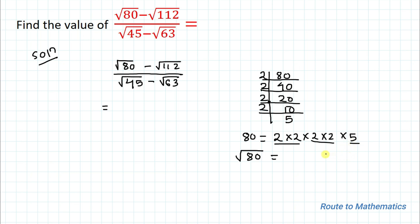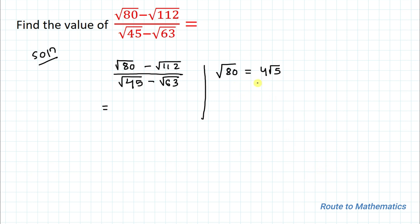We pair the factors of the same numbers: here is one pair of 2s and another pair of 2s, and 5 has no pair so we take it as root 5. For each pair we take a single number — a 2 for each pair — so the value of root 80 is 4 root 5.